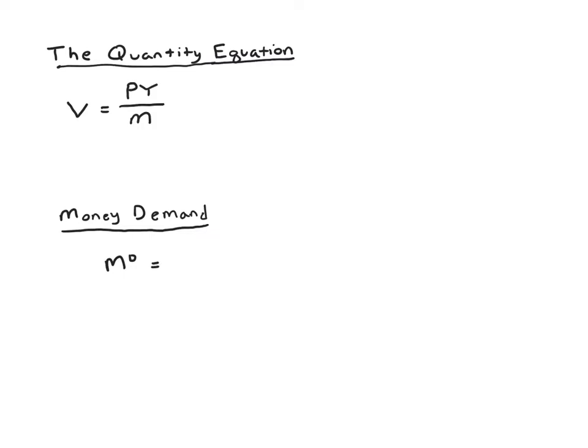But no one really likes this form of the equation. What they like to do is rearrange this into the most common form, which is called the quantity equation, or more often MV equals PY. So rearrange to MV equals PY. And this equation is basically just a definition of velocity, but more commonly it's called the quantity equation.